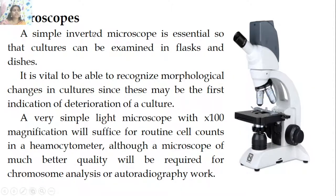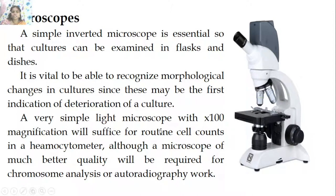A simple inverted microscope is essential so that cultures can be examined in flasks and dishes. It is vital to recognize morphological changes in the culture after growth, as this may be the first indication of deterioration. A simple light microscope with 100x magnification is sufficient for routine cell counts in a hemocytometer, though better quality microscopes are required for chromosome analysis and autoradiography.